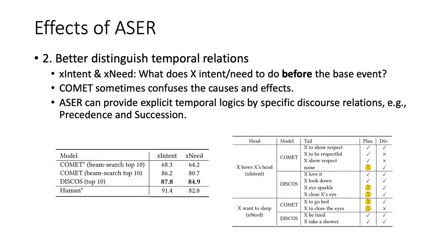Next, we find that Discourse performs well on X-intent and X-need, which are two causal relations — what does X intend to do before the event, and what would X like to do after the event. We find that COMET sometimes confuses causes and effects, while Discourse can prevent this problem as Acer provides explicit temporal relations like precedence and succession. For example, in COMET, 'X wants to sleep' is given as the reason that X goes to bed, not the result.